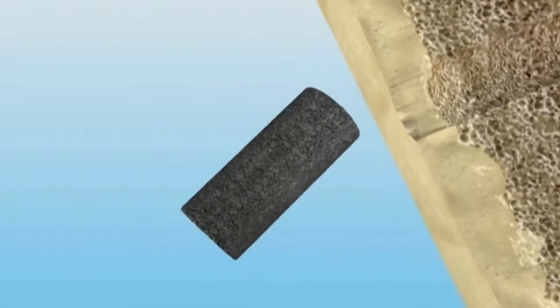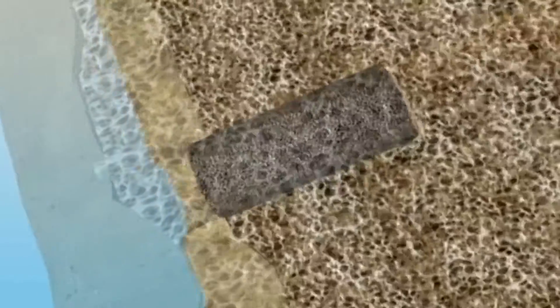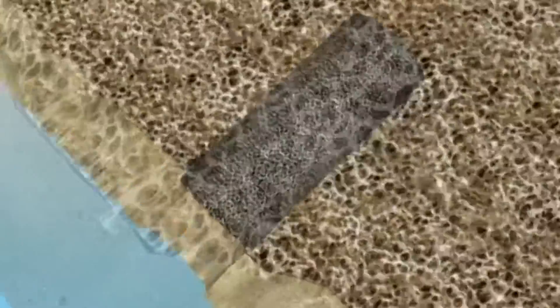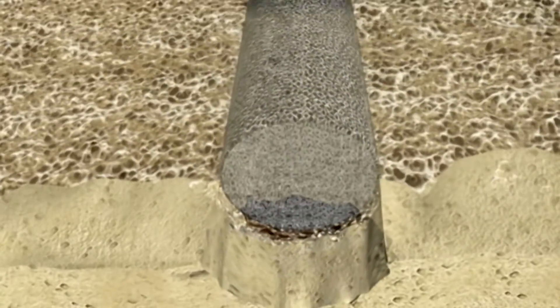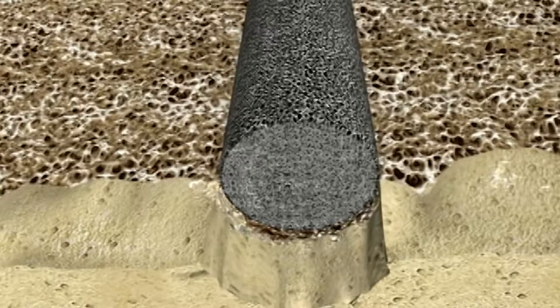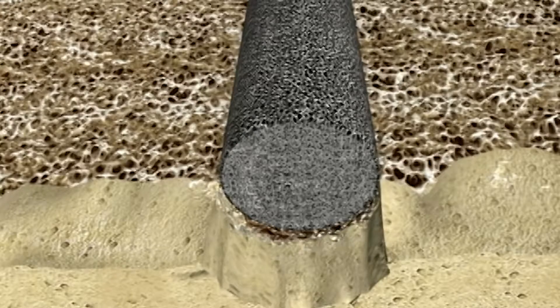Consisting of elemental tantalum, trabecular metal material is fabricated by means of a vapor deposition technique that creates a metallic strut configuration much like that of trabecular bone.